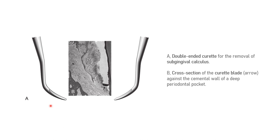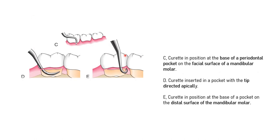This picture shows the universal curette with two sides, used for sub-gingival calculus removal. The cross-section of the curette blade can be seen held against the cemental wall of the deep periodontal pocket. In this picture the curette is positioned at the base of the periodontal pocket on the facial surface of a mandibular molar. The curette is inserted into the pocket with the tip directed apically, and here it is positioned at the base of the pocket on the distal surface of the mandibular molar.